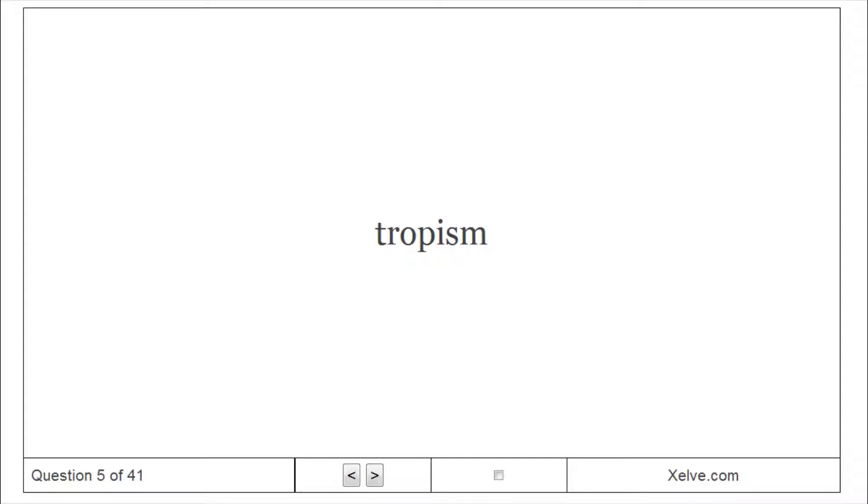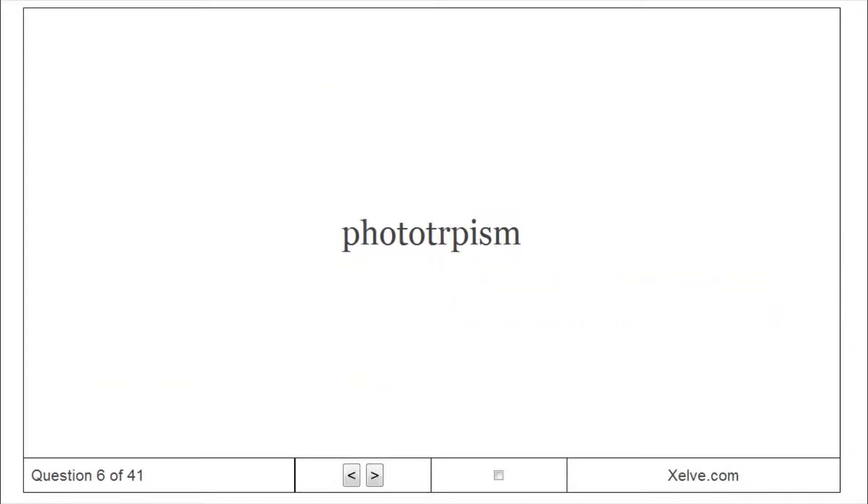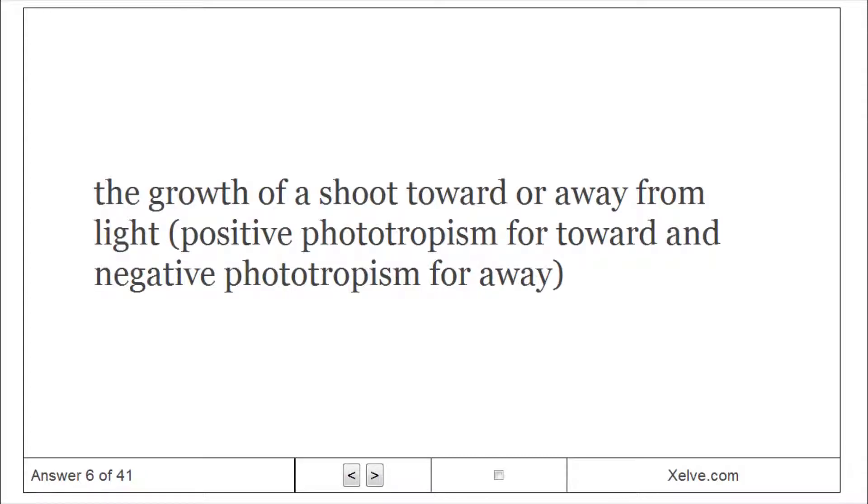Tropism: any growth response that results in plant organs curving toward or away from stimuli. Phototropism is the growth of a shoot toward or away from light, with positive phototropism for toward and negative phototropism for away.